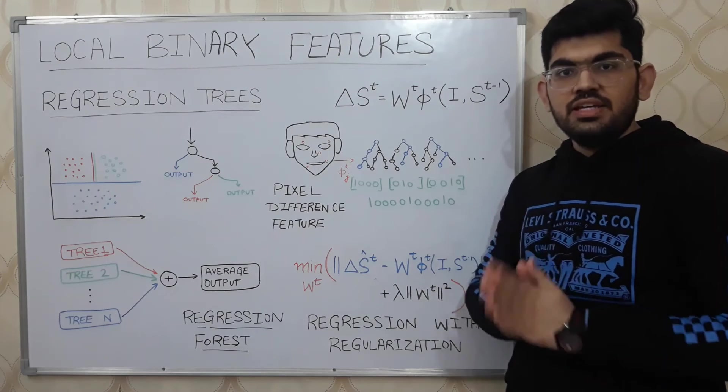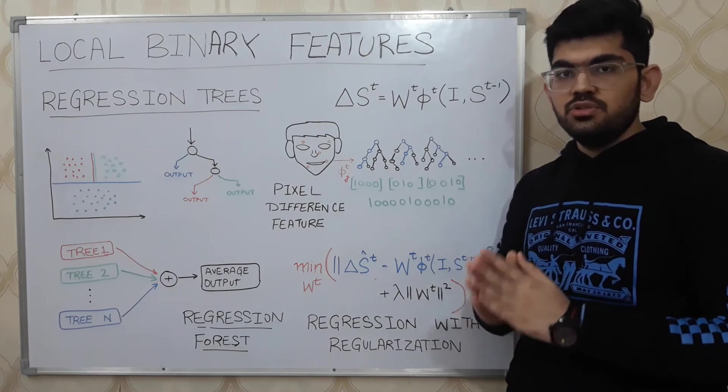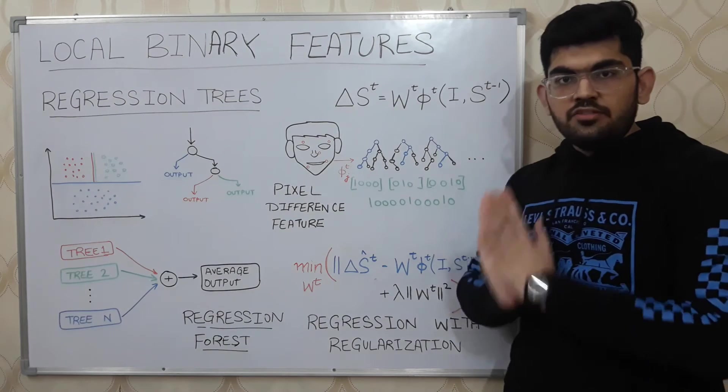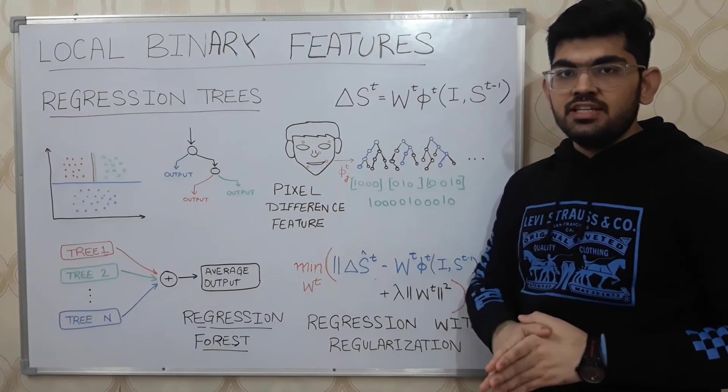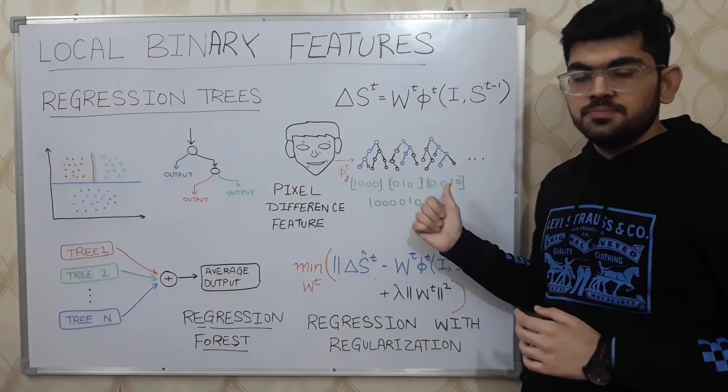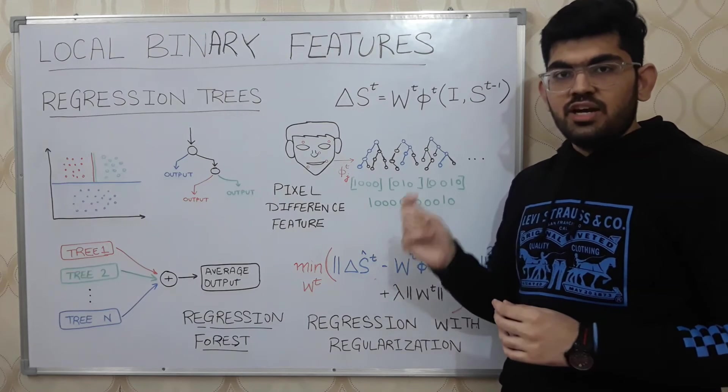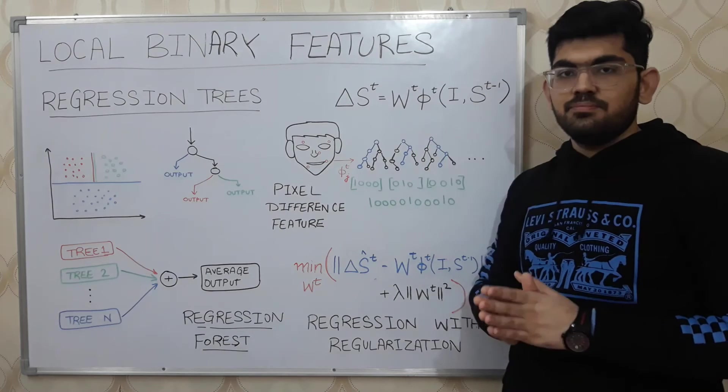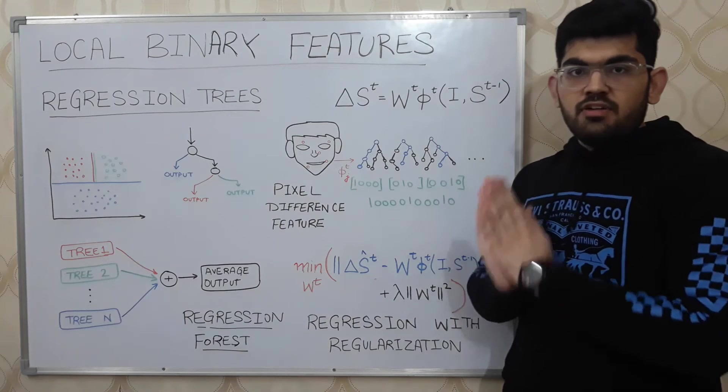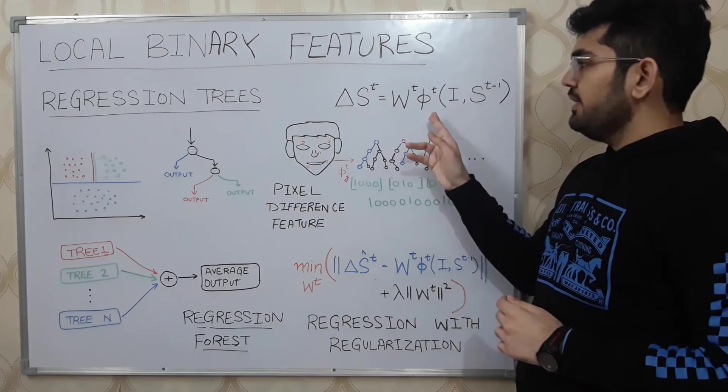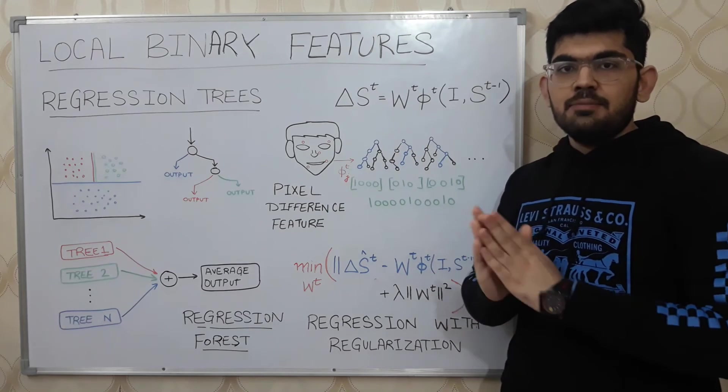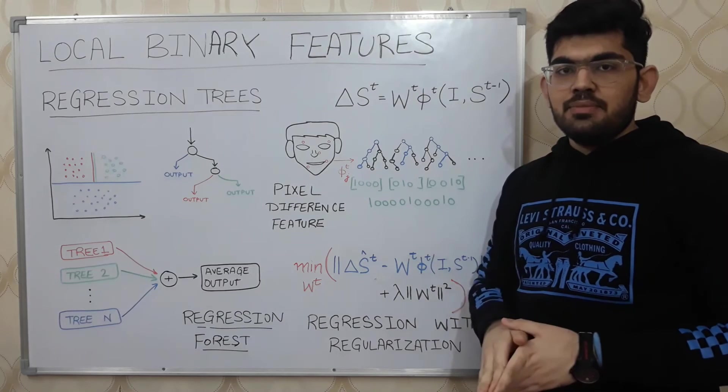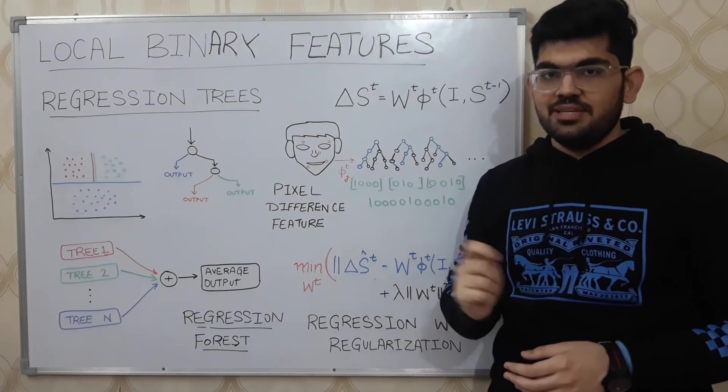During runtime, we get the value corresponding to the leaf nodes of all these regression trees. And finally, we calculate the average of all these regression tree outputs. And this average value is what constitutes the final prediction of the phi t projection function. Once we have trained these two parameters phi and w, we can finally apply them in an iterative manner to get the landmarks that would be present on a given face image.